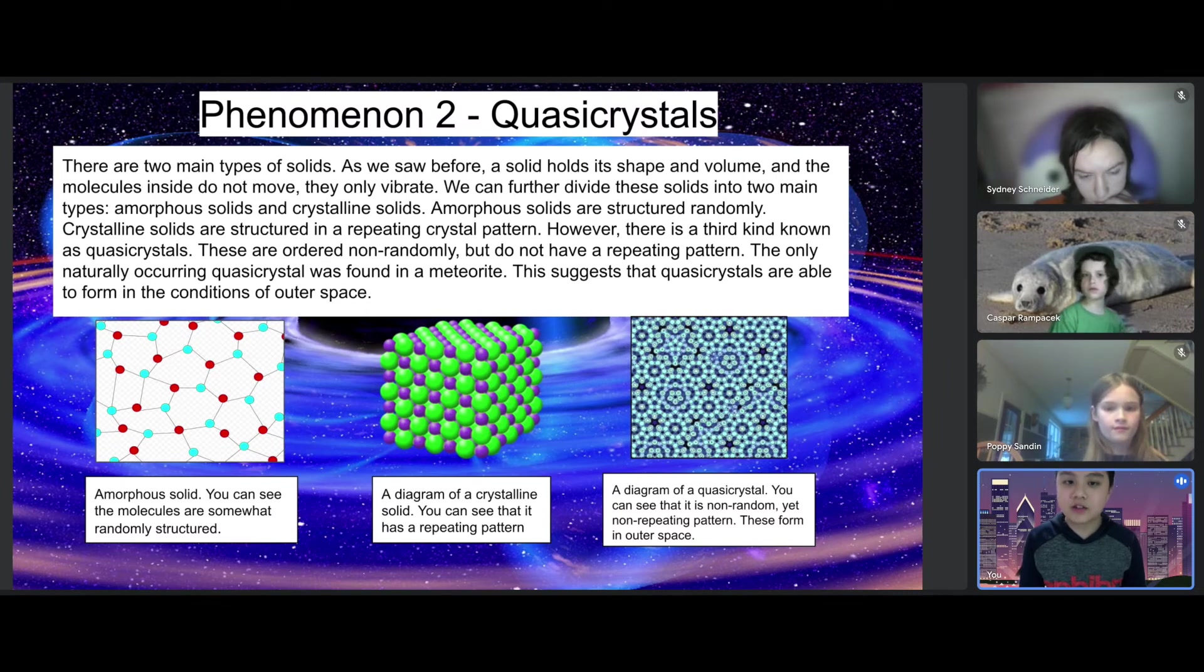Amorphous solids are structured randomly, while crystalline solids are structured in a repeating crystal pattern. However, there is a third kind known as quasicrystals. These are ordered non-randomly but do not have a repeating pattern. The only naturally occurring quasicrystal was found in a meteorite, suggesting quasicrystals can form in the conditions of outer space.